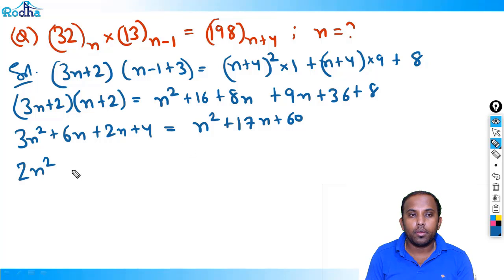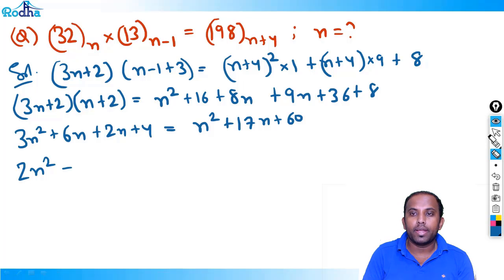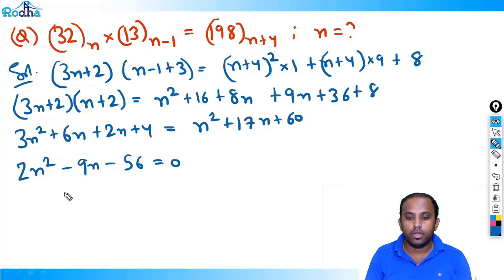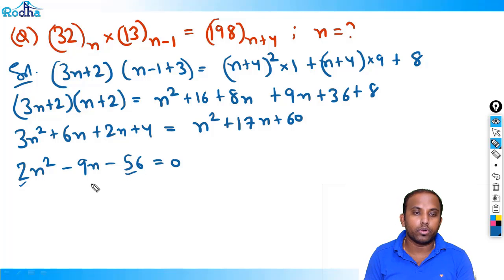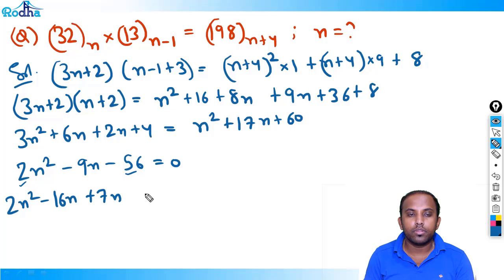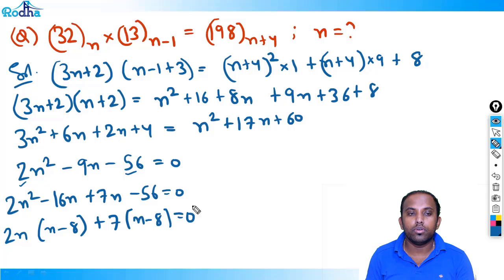Simplifying: 2n²-9n-56 = 0. Solving this quadratic: 56×2 = 112 and 16×7 = 112. So 2n²-16n+7n-56 = 0, giving 2n(n-8)+7(n-8) = 0. Therefore n = 8 or n = -7/2. Since base cannot be negative, n = 8.